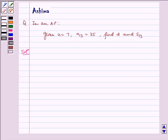Hello and welcome to the session. Let us understand the following question today. In an AP, given A is equal to 7, A13 is equal to 35, find D and S13.